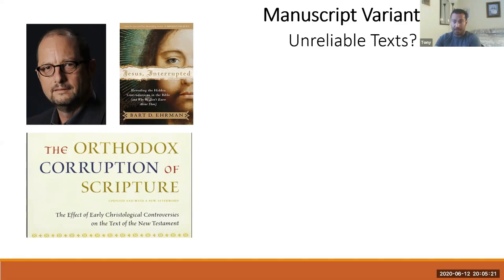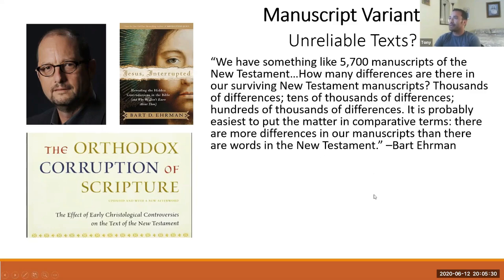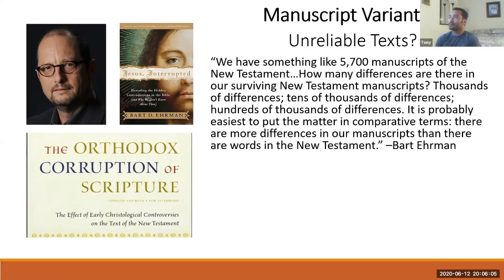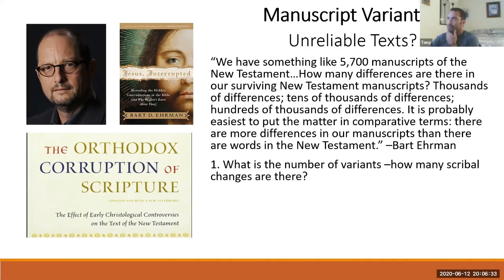Ehrman remained a liberal Christian for 15 years but later became an agnostic atheist after struggling with these questions. He famously says: 'We have something like 5,700 manuscripts of the New Testament — how many differences are there? Thousands of differences, tens of thousands, hundreds of thousands of differences. There are more differences in our manuscripts than there are words in the New Testament.' This is meant to shock you — but there are three important questions we need to ask ourselves in response.